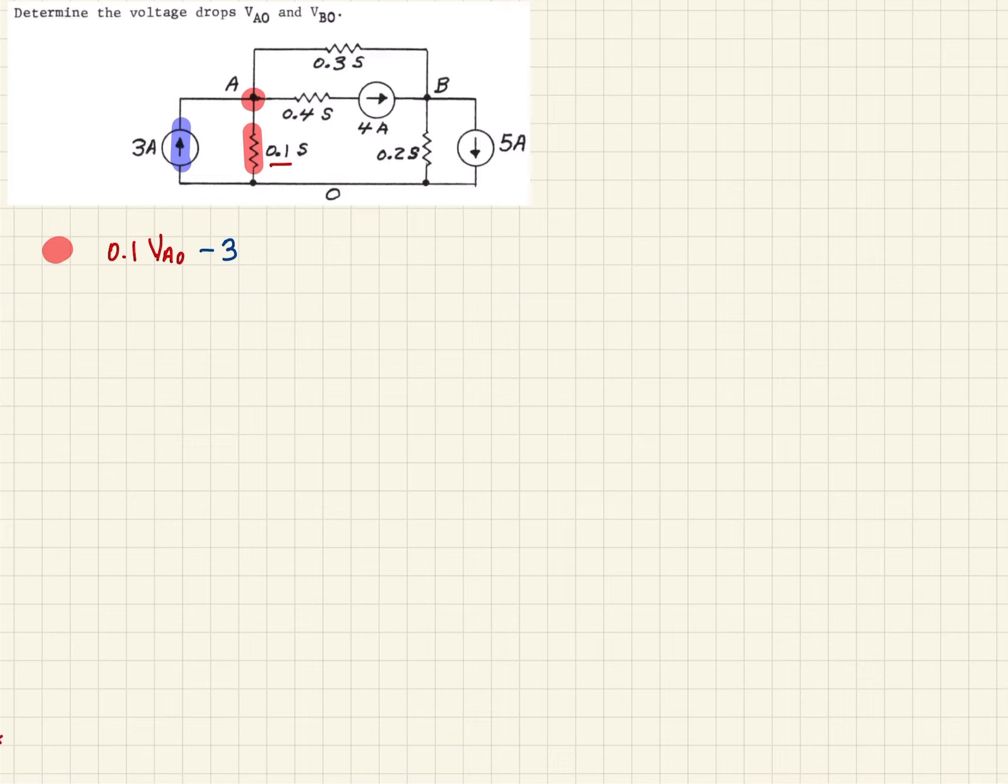Now if we continue to look around the branches here, we have this branch here. While we do have a resistance there, there's also a current source that's defining what the current is in that branch, and it's showing that it's leaving node A. So that being the case, that would just be plus 4, plus 4 amps.